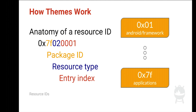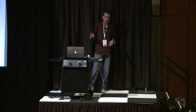The resource type tells the system whether it's a drawable, integer, string, etc., indicating exactly where to go in the table. The entry index tells it quickly where in memory to fetch that resource. Using these three values, the system can quickly grab a resource at runtime and bring it back to the application, whether it's used in layouts or code.